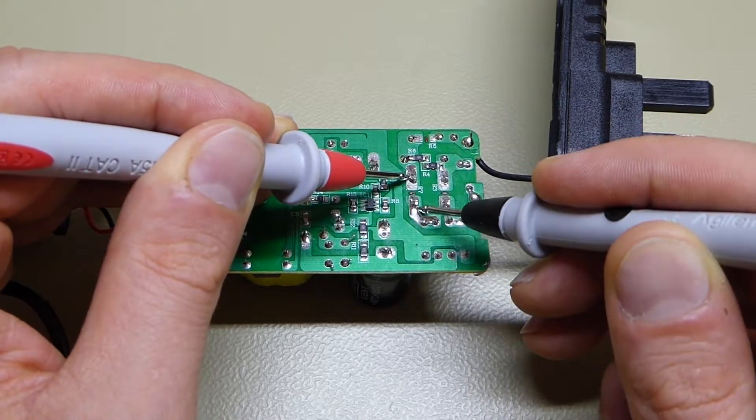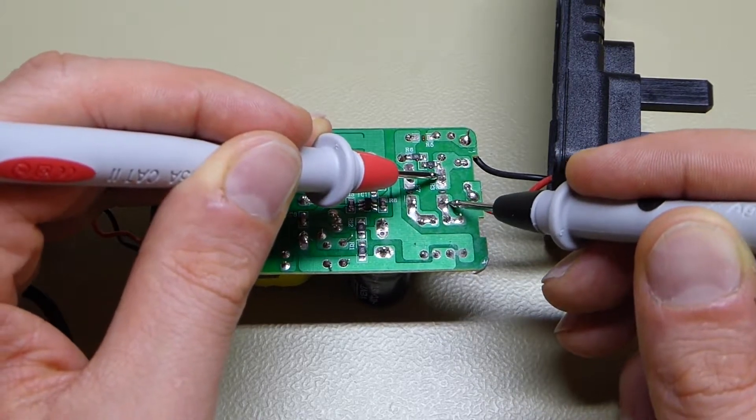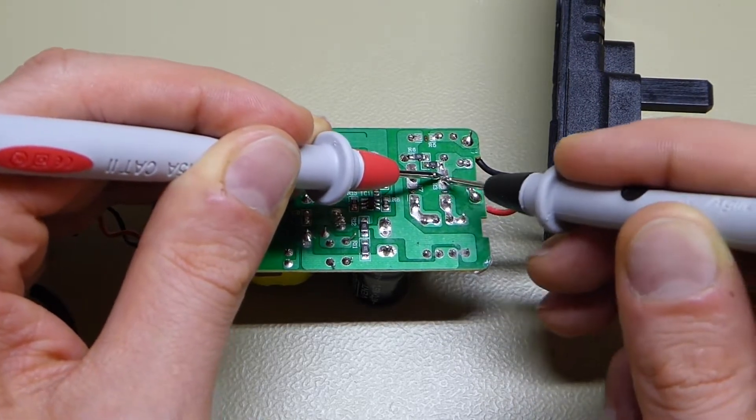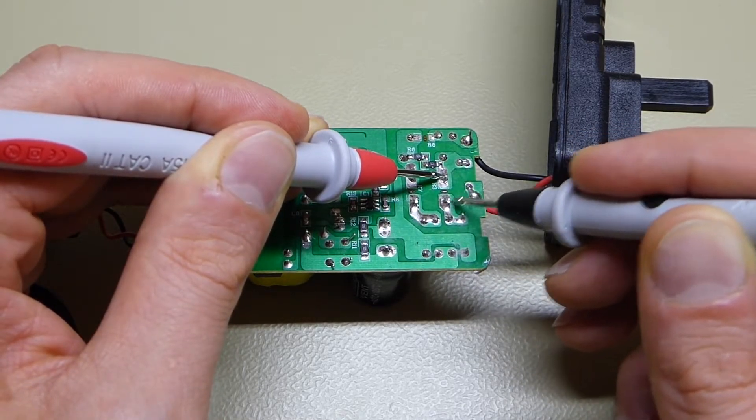And if we look at the common mode choke here, we get nothing. And interestingly the same on this side as well. So it's not just that one of the wires has come off.